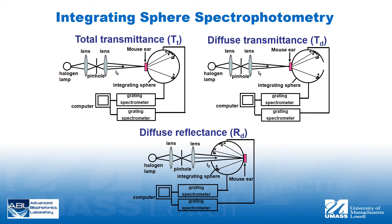Spectroscopic measurements were performed at tissue temperatures of 25, 36, and 60 degrees Celsius. For total and diffuse transmittance measurements, shown in the top left and right configurations respectively, light emitted from a halogen lamp was focused onto mouse ears attached to the entrance port of the integrating sphere. The exit port was closed during total transmittance measurements. For measuring diffuse transmittance, the exit port was opened to allow collimated light to escape.